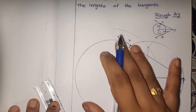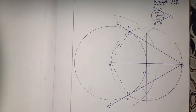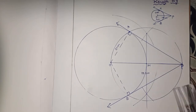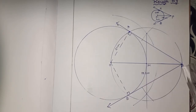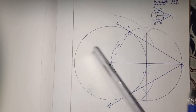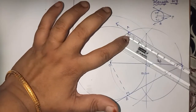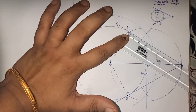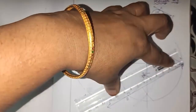Now the construction is ready. Also measure the length of the tangents. This length is the length of the tangents. You already know conceptually that the length of the two tangents from an external point to a circle are equal.